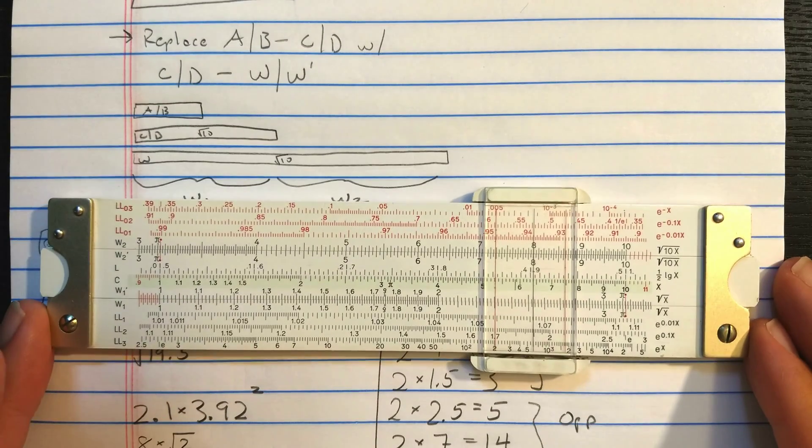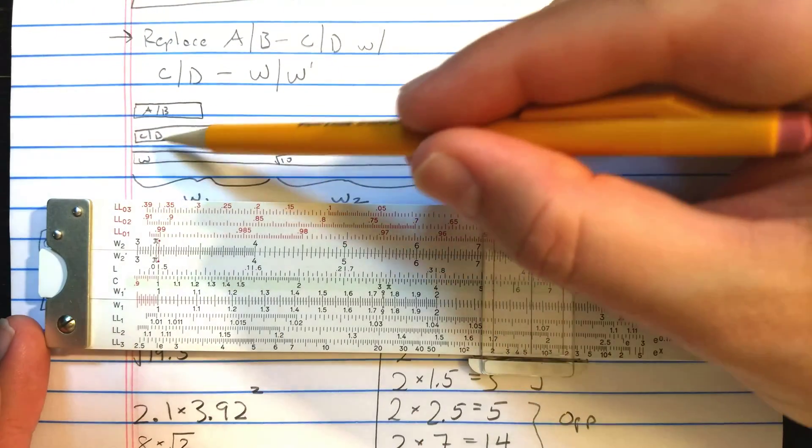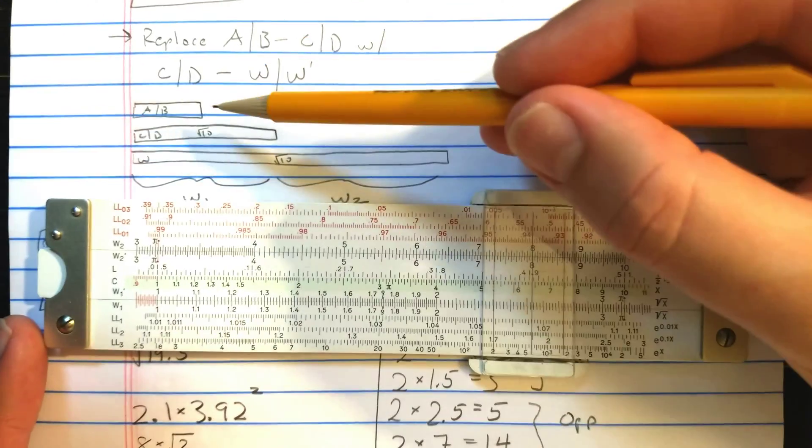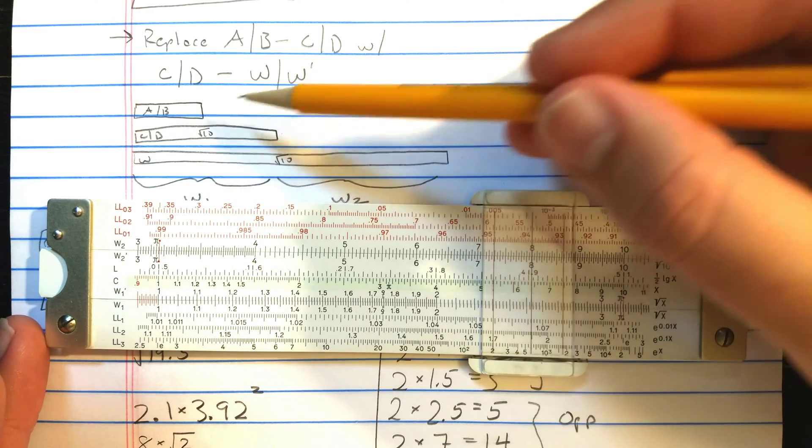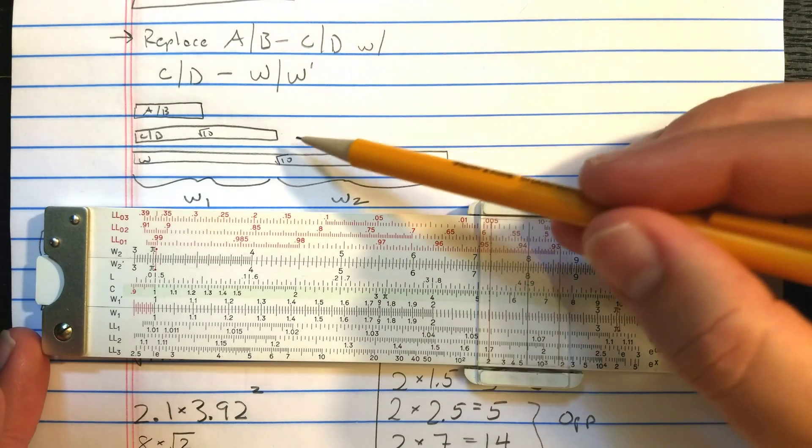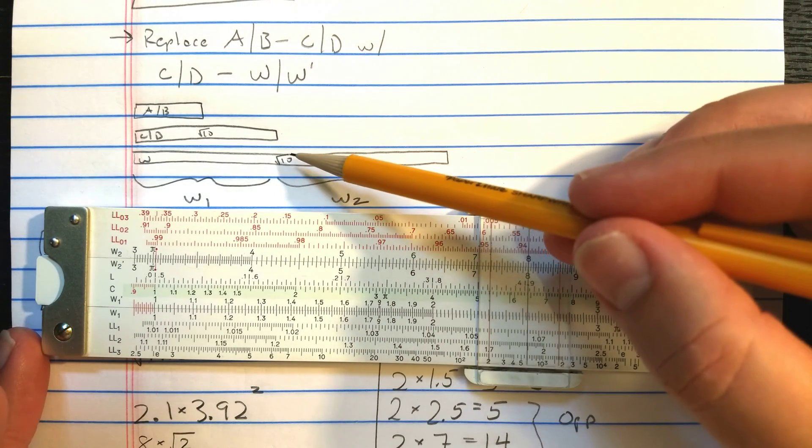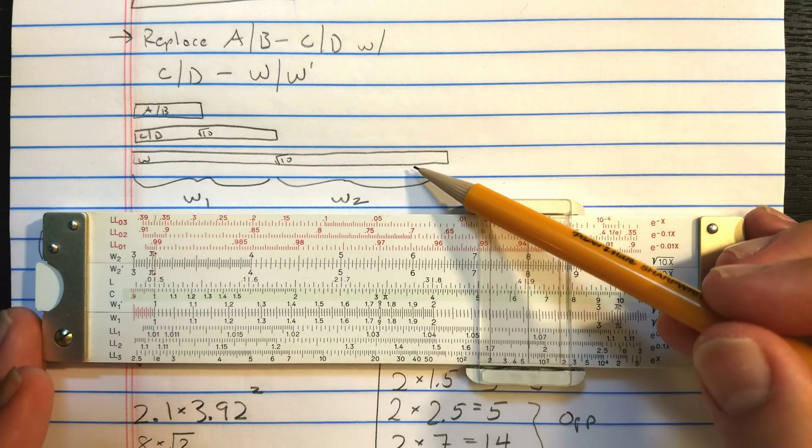So what are the W scales? Well, if here is the length of your slide rule and here is a C or D scale, we know the A or B scale is half length, and you need two of them to be as long as the C or D scale. Well, the W scale is a logarithmic scale, which is twice as long as the C or D scale. Otherwise, it's graduated in the same way, logarithmically, base 10.